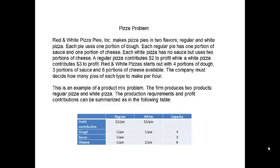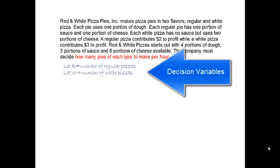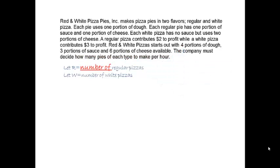The first step in going from a verbal description to a mathematical description is to define decision variables. What is the decision maker's question — what do we want the answer to tell us? We want to know how much of each type of pizza. Since there are two types of pizza, there will be two decision variables. We can represent the number of regular pizzas by R, and let W represent the number of white pizzas. Decision variables should be defined in a way that tells how each will be measured; here the units of measure are the number of pies.